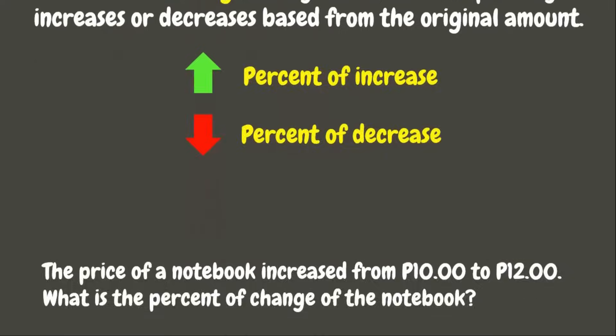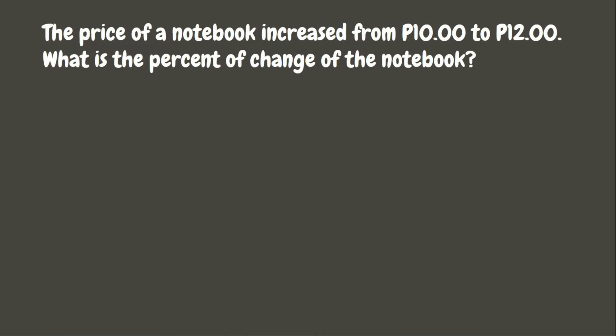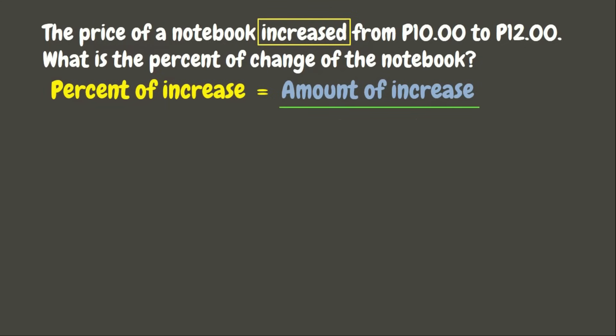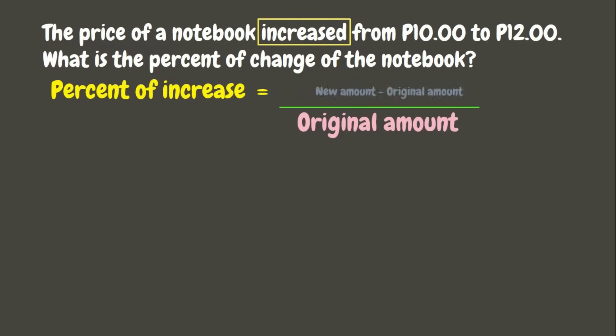Let's go back to our problem. It is said from the given situation that the price of a notebook increased, which means we are looking for the percent of increase. To get the percent of increase, we need to divide the amount of increase by the original amount. To get the amount of increase, we need to subtract the original amount from the new amount. This gives us the formula: percent of increase equals new amount minus original amount, divided by the original amount.